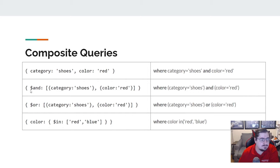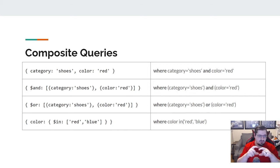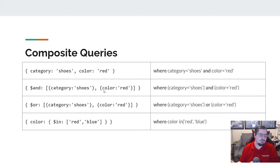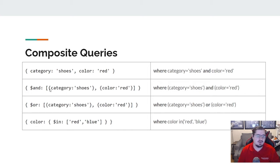$and takes a list — an array — and says all of these things have to be true. That array can have two or more criteria, even 10 different criteria that all need to match. For the simple example, I'm just putting in two objects — you can think of the curly braces kind of as parentheses. So we're saying where category is equal to shoes AND color is equal to red. $or then becomes a very similar syntax — we use the $or operator and it takes an array of different sets of criteria. So it can either be that the category is shoes or it can be that the color is red.